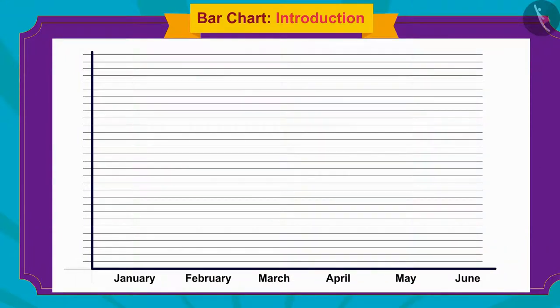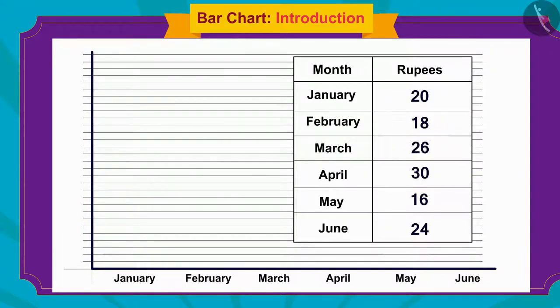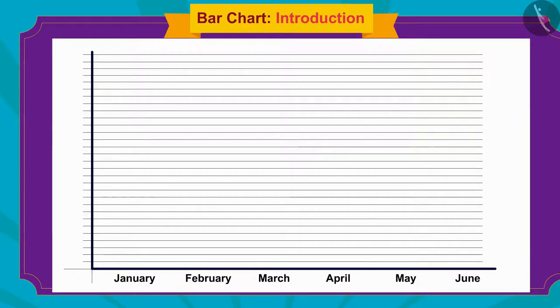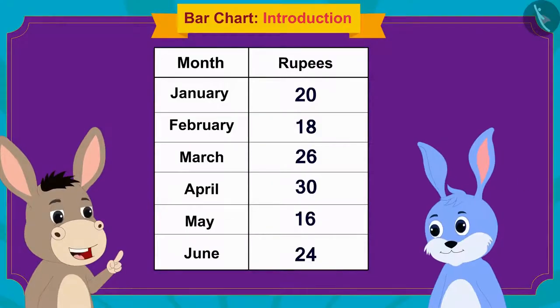Bholla wrote the names of the six months on the horizontal line. Then, in order to determine the interval between the numbers on the vertical line — the scale of the chart — he found the largest number in Bunny's table, which was 30.